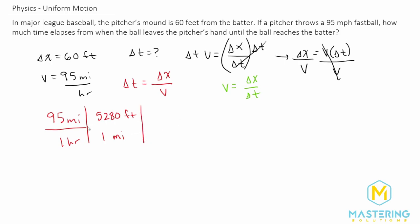And now let's change the time. So one hour to cancel the hour and we want to go into seconds. So we know that there are 3,600 seconds per hour.